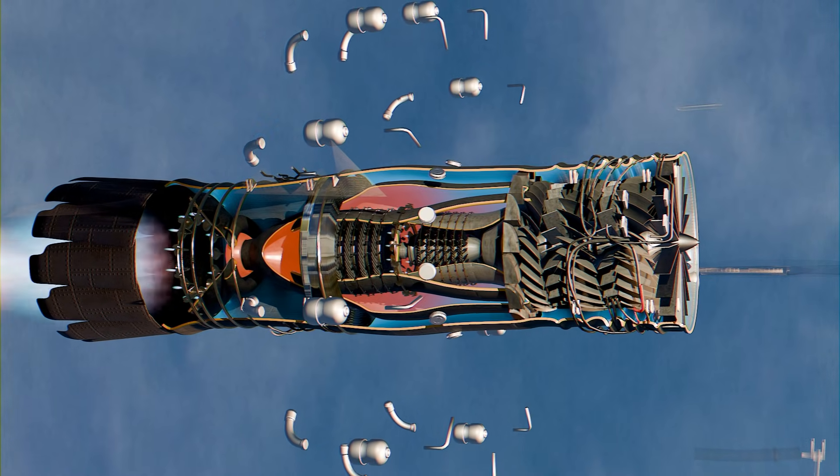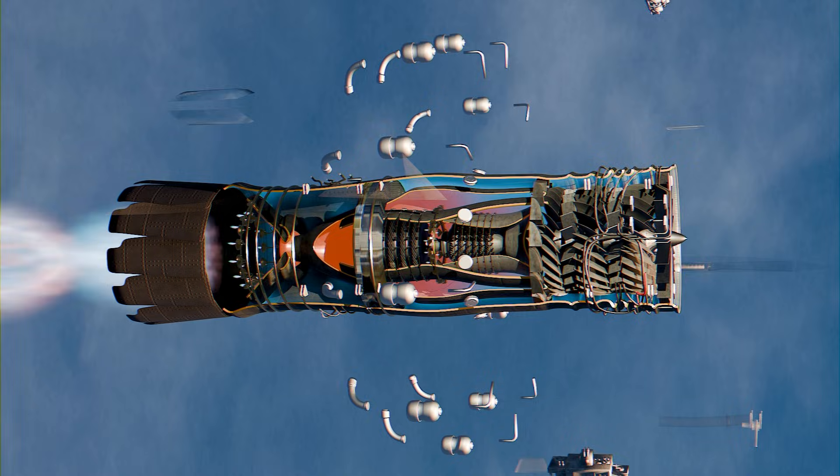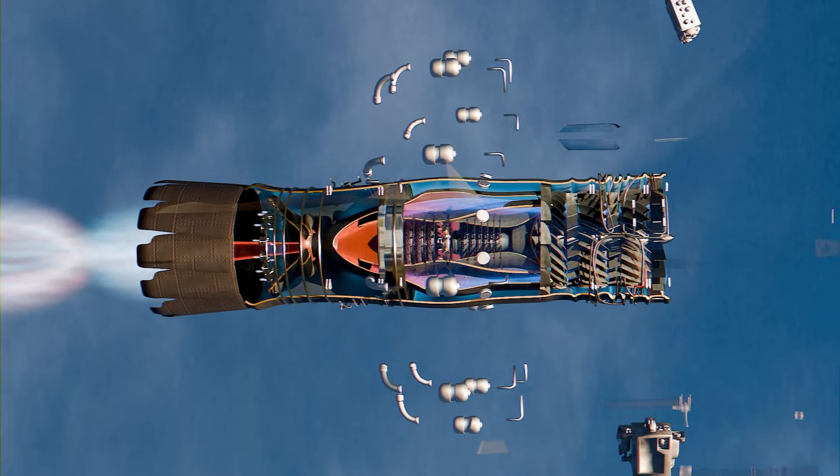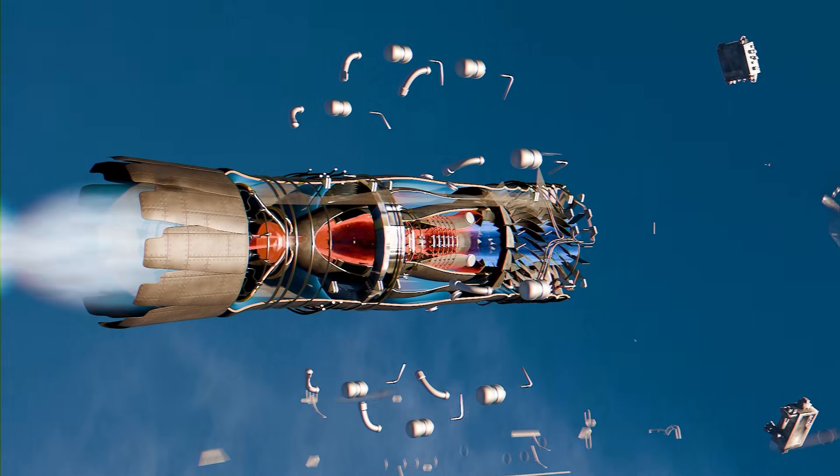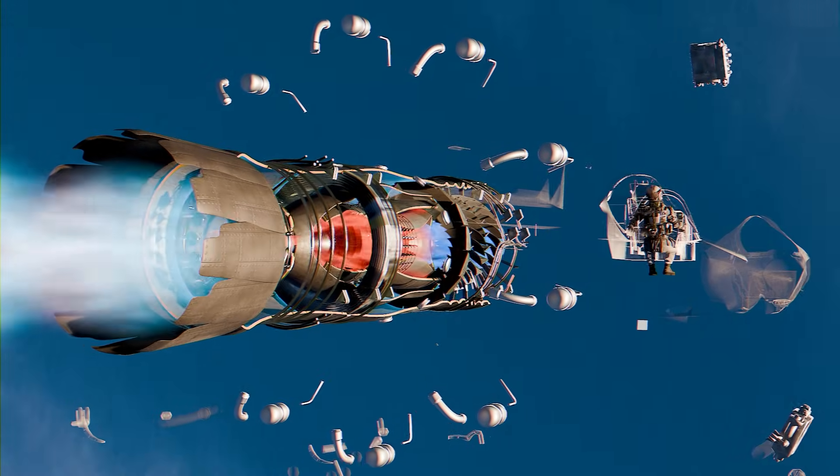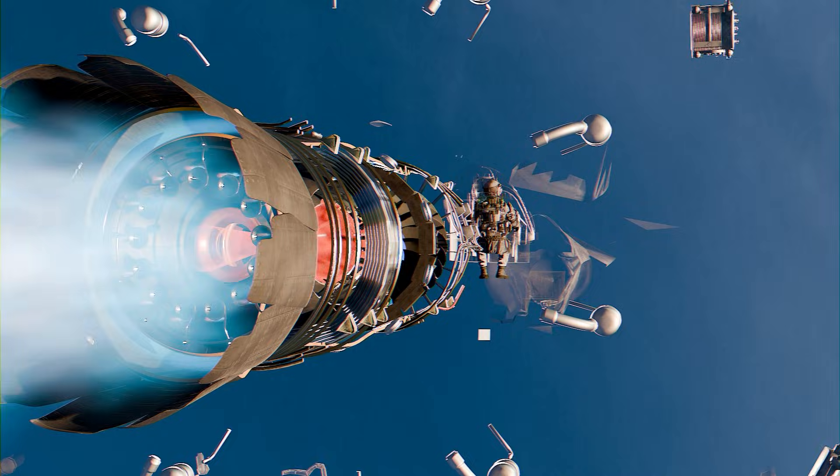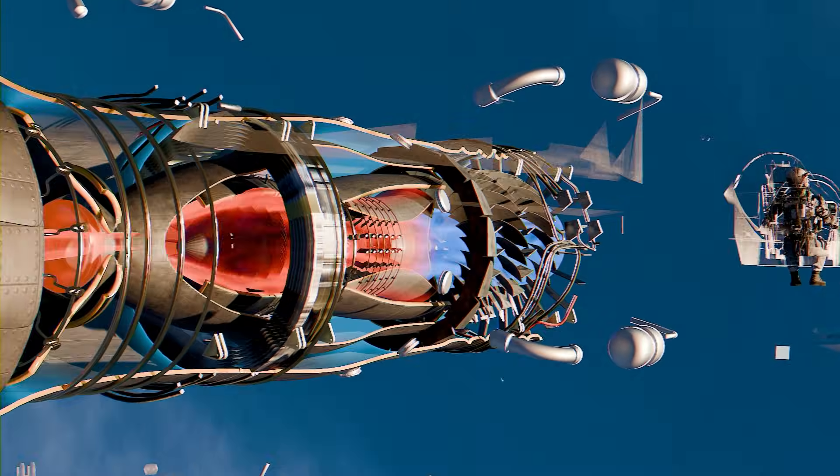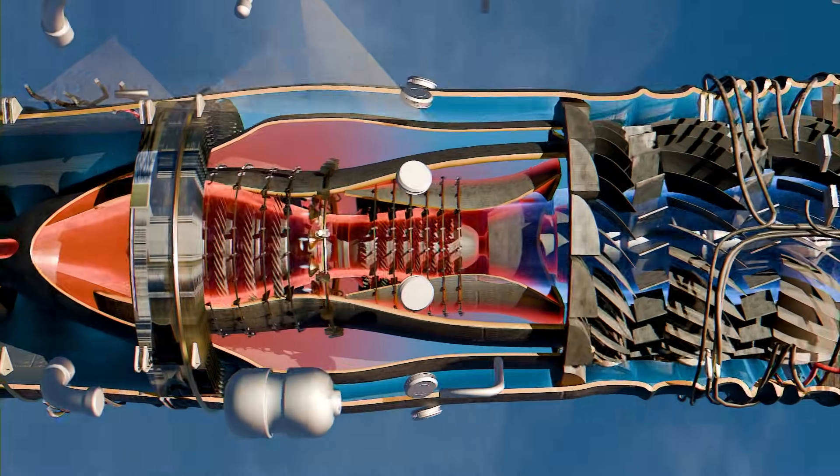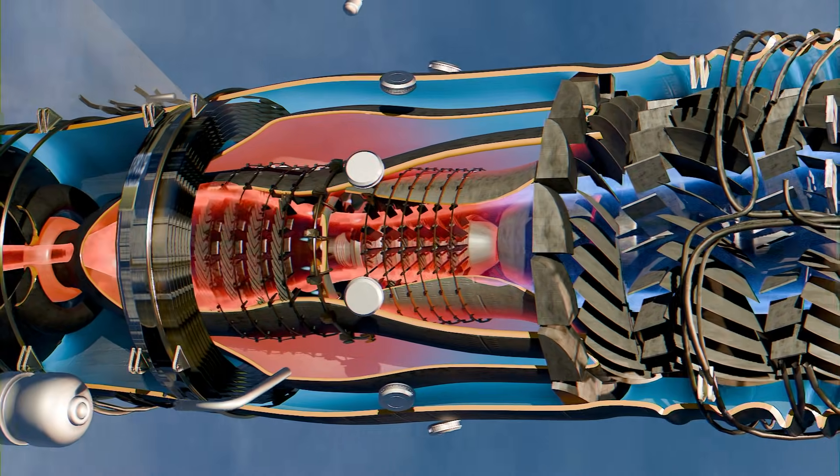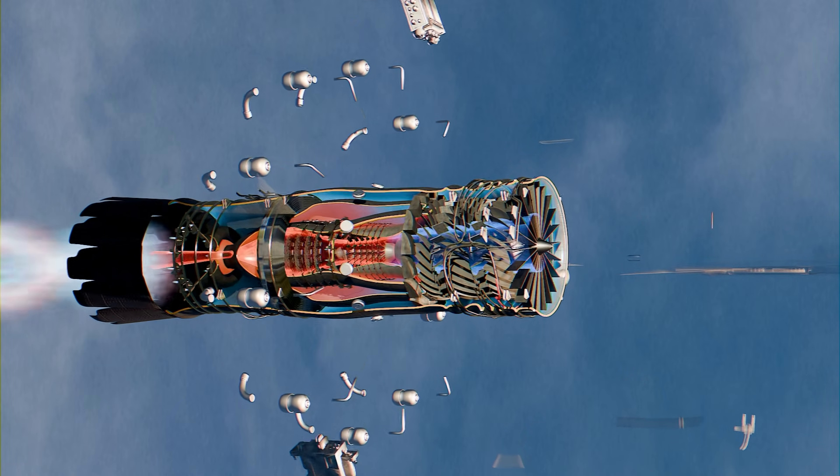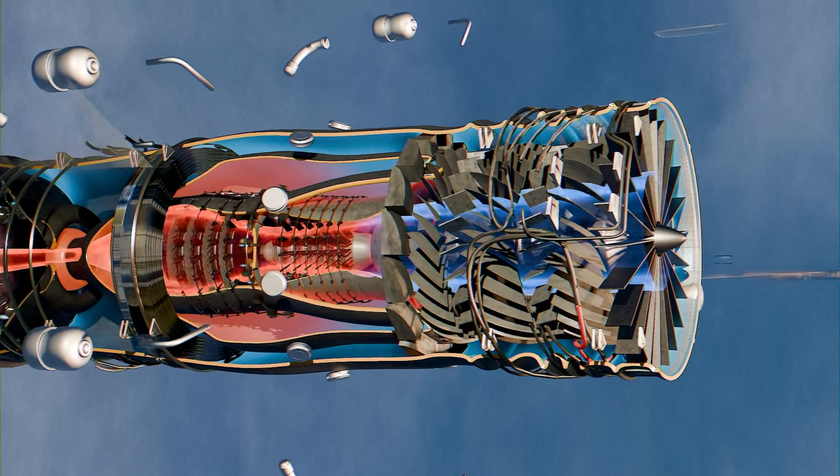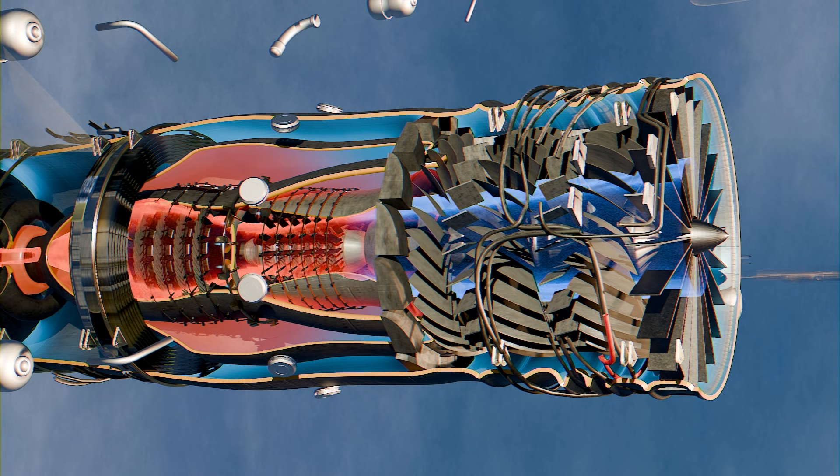So within just these three fan stages, the XA100 can transform its entire operating character: a high bypass engine when efficiency matters, a low bypass turbojet when maximum thrust is demanded, and a thermal management system when excess heat needs to be dumped. This is the foundation of the XA100's flexibility. Every other stage in the engine depends on this intelligent airflow management being precise and instantaneous.